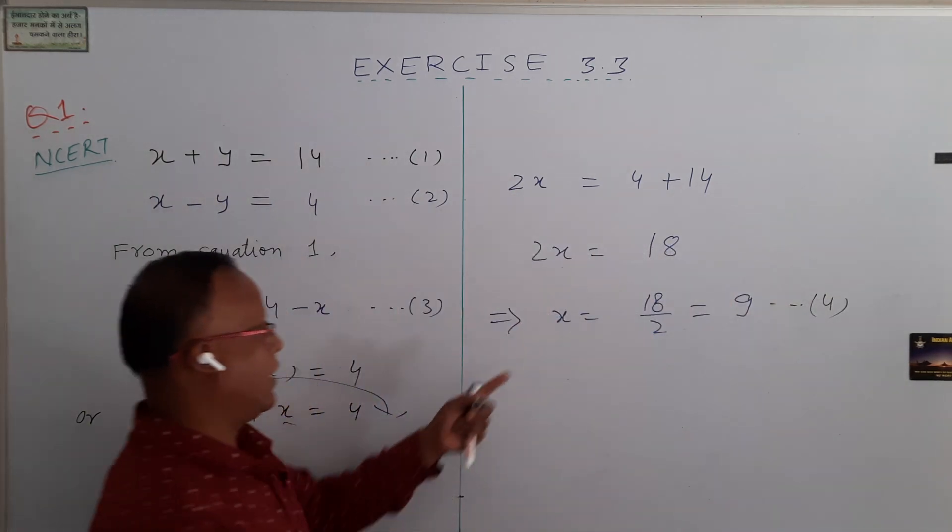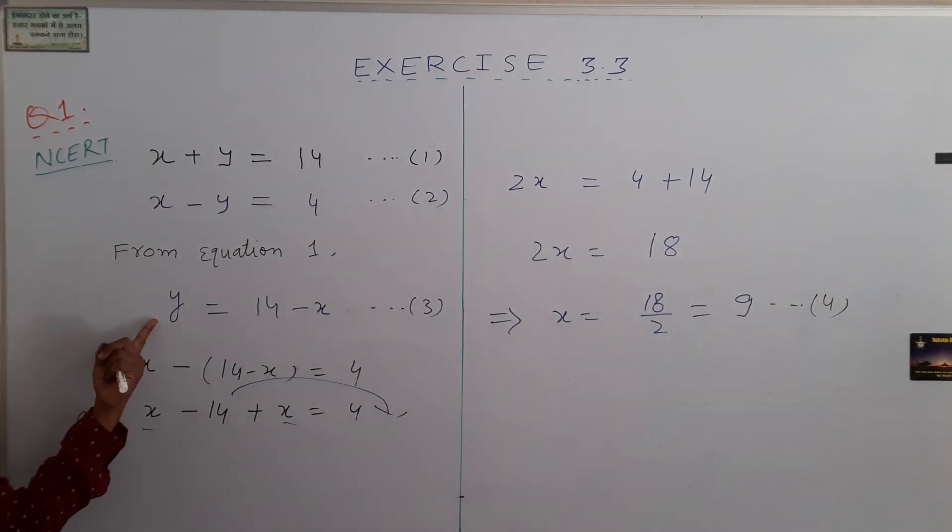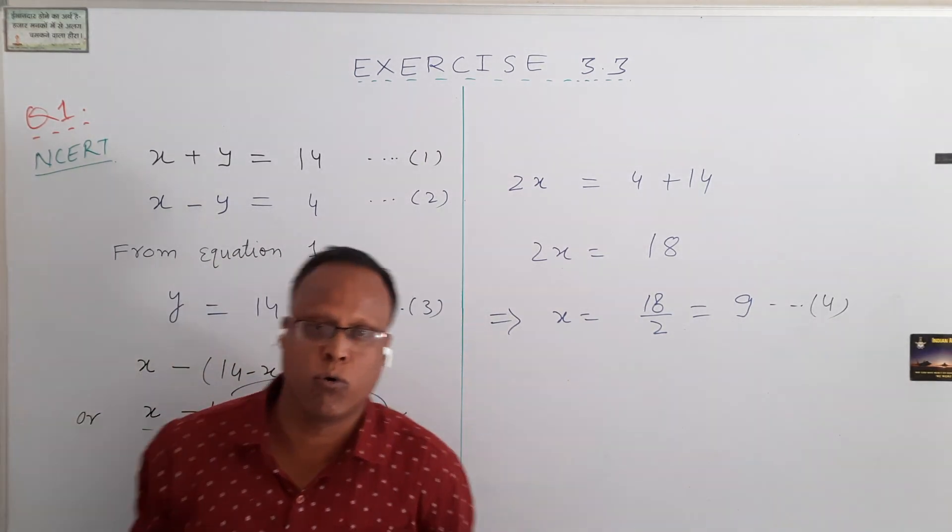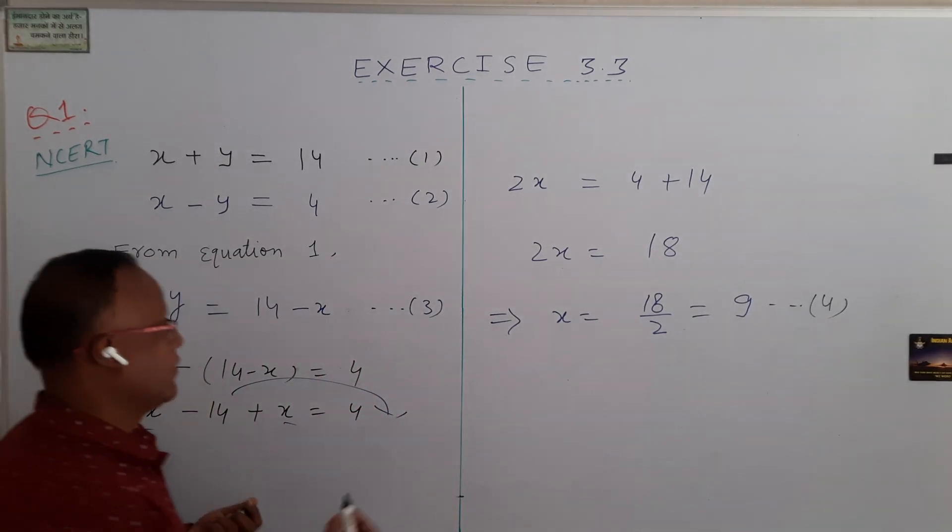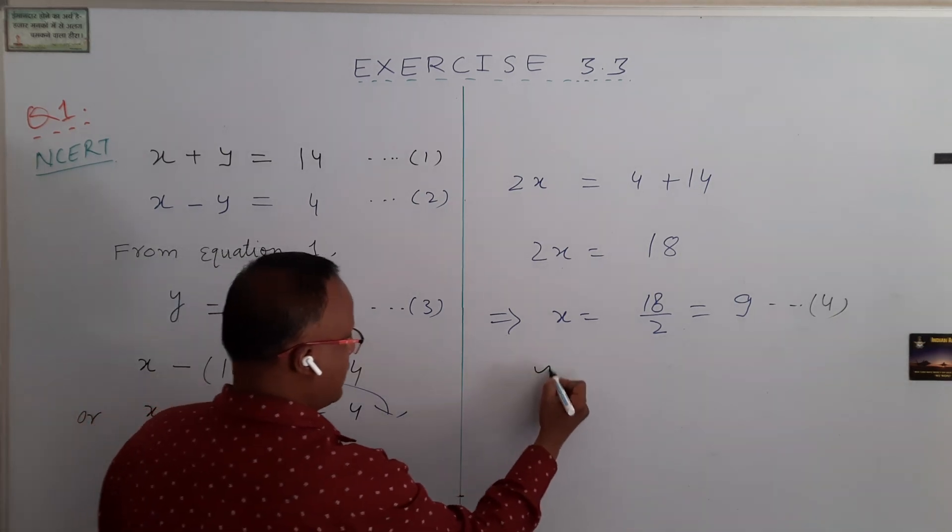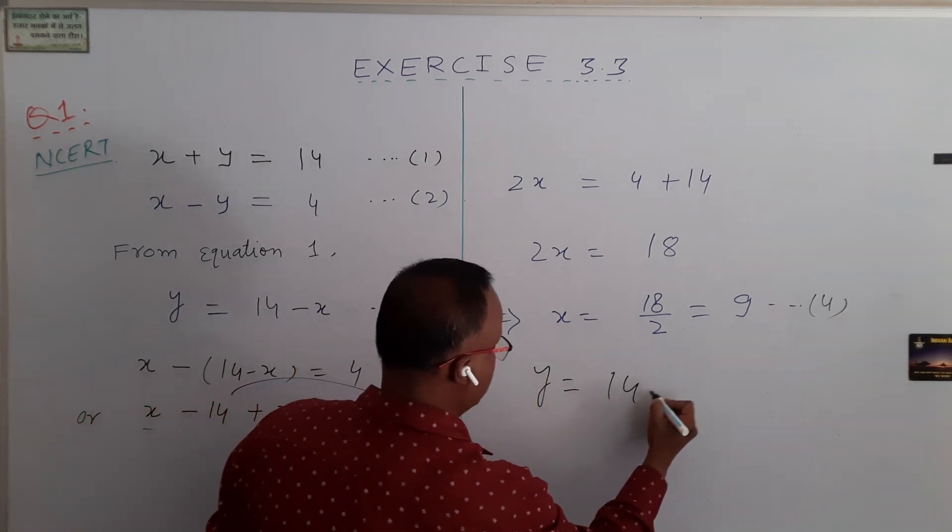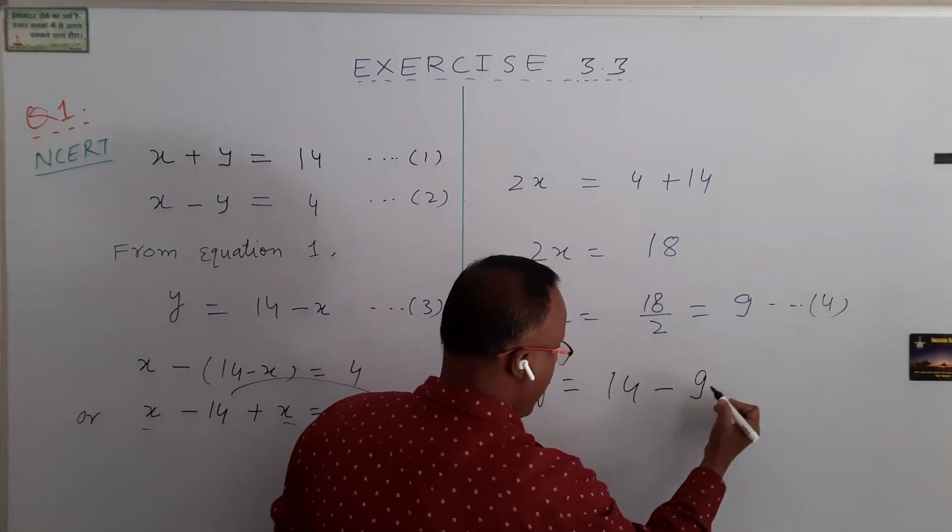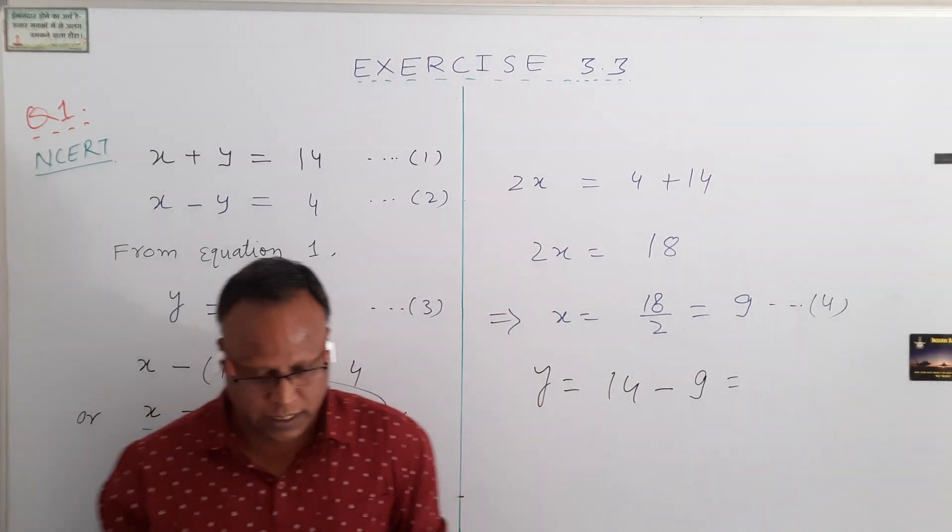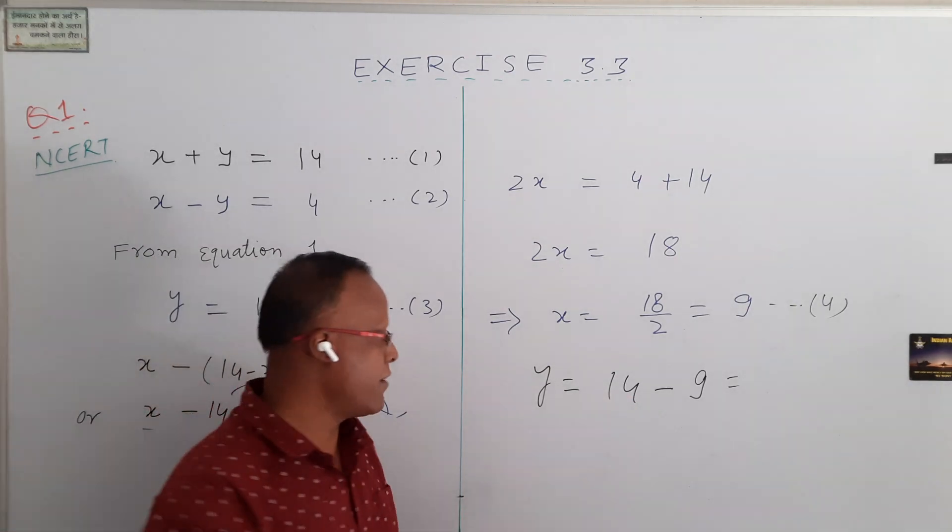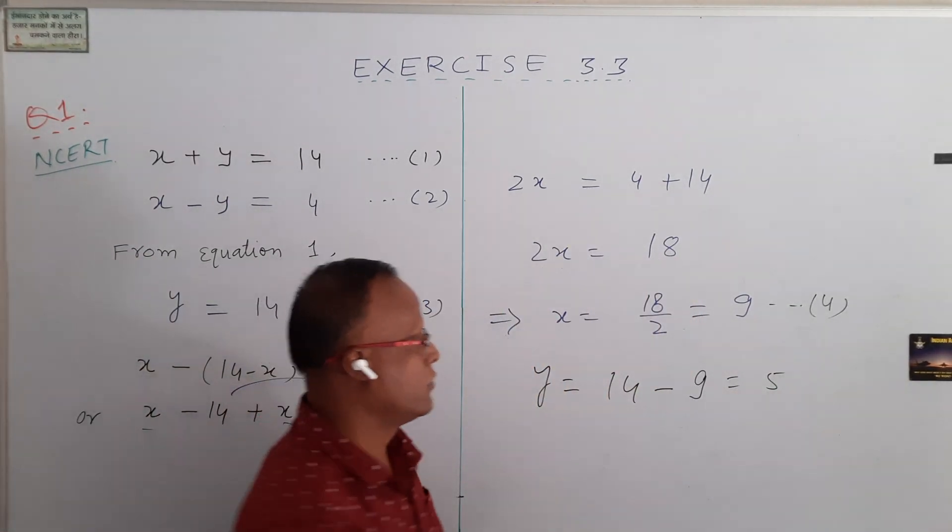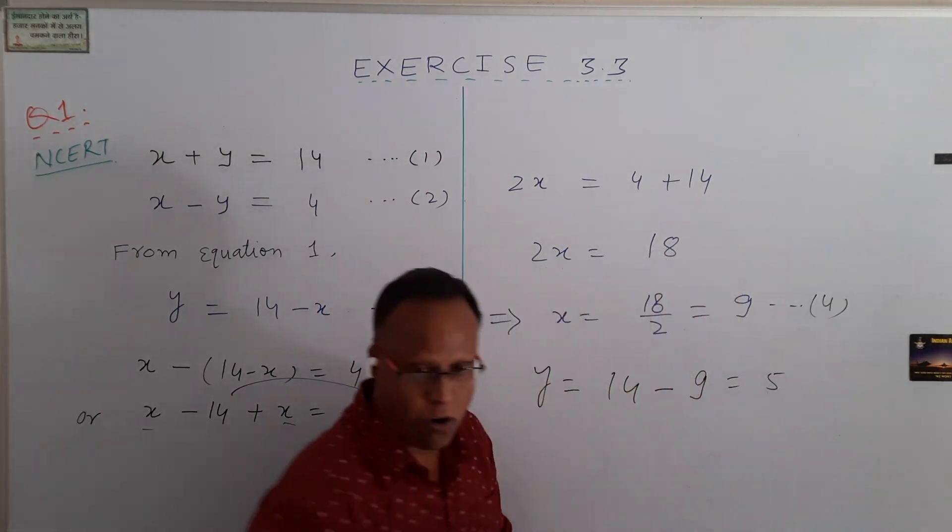This value of x, substituting the value of x from equation 4 into equation number 3, we will get value of y. That is y equal to 14 minus x. In place of x, what do we write down? 9. And 14 minus 9 is 5. So your value of y comes out 5.